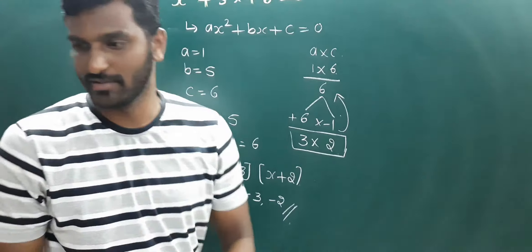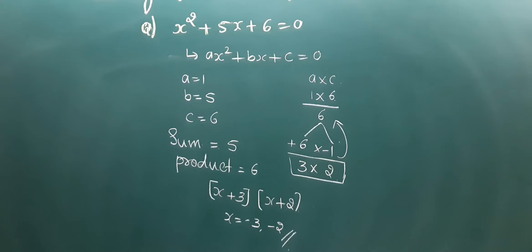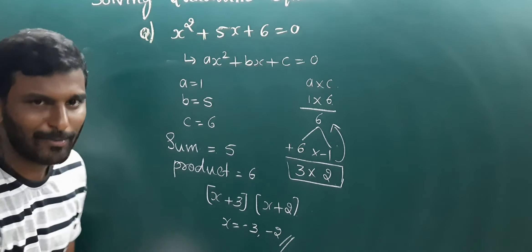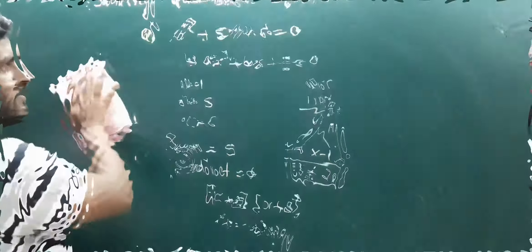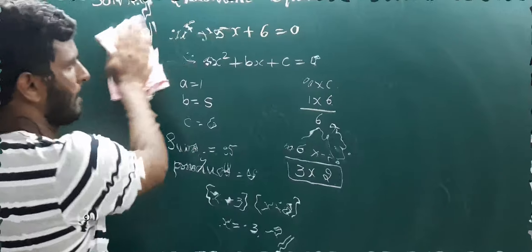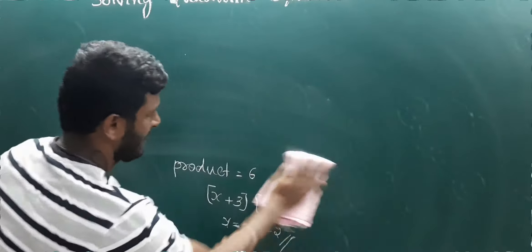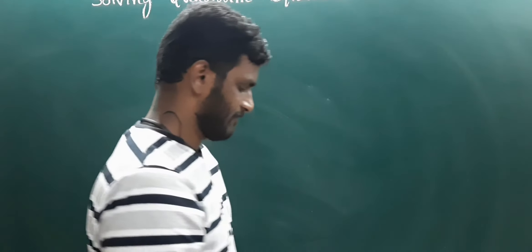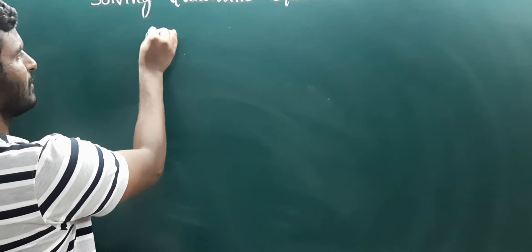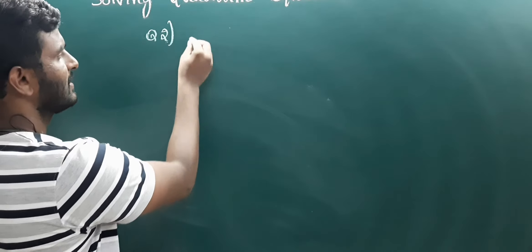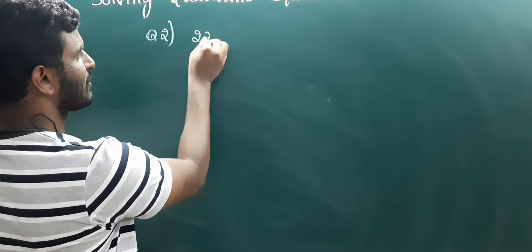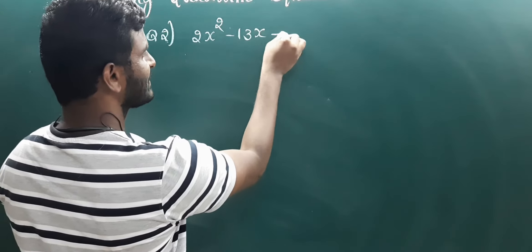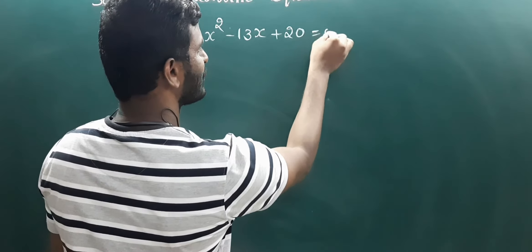Let us move to the next question. Pause the video and note it down. The next question, question number 2: 2x squared minus 13x plus 20 equals 0.